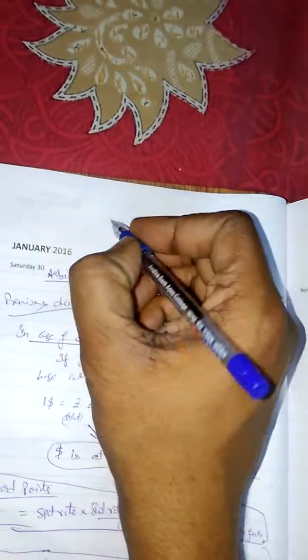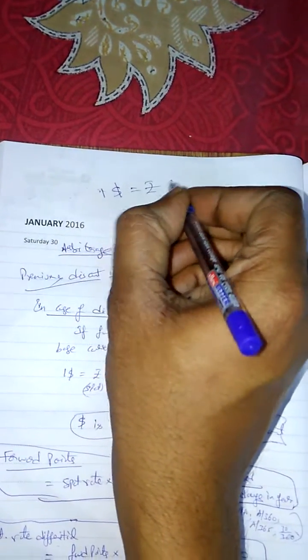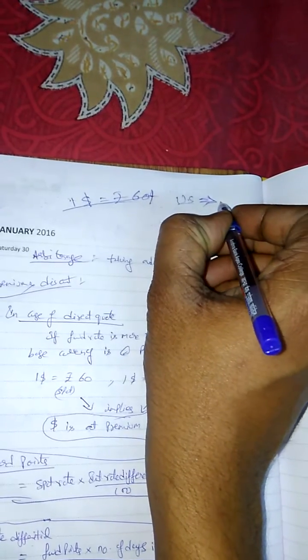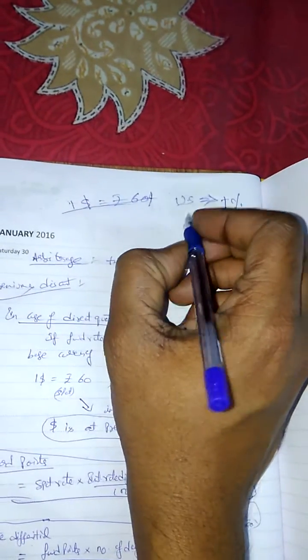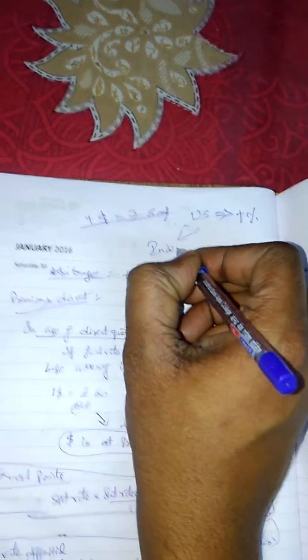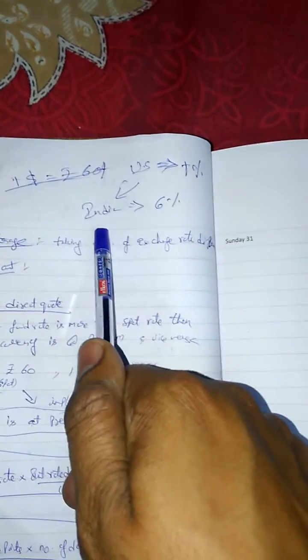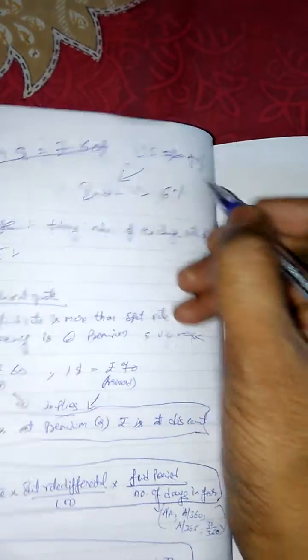The next topic in foreign exchange arithmetic is arbitrage. Arbitrage is nothing but taking advantage of exchange rates. For example, I am taking a loan in the US at an interest rate of one percent. The same amount I am investing in India and getting a return of six percent. So I am taking a loan at one percent and investing in another country at six percent, earning a margin of five percent.